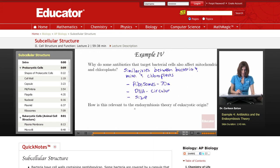How is this relevant to the endosymbiosis theory of eukaryotic origin? Well, the endosymbiotic theory states that organelles from the eukaryotic cell are a result of a relationship and the engulfment of smaller aerobic bacteria by larger anaerobic bacteria.